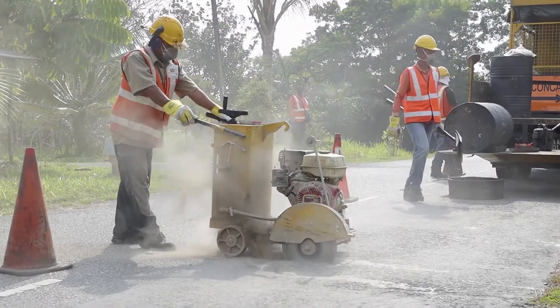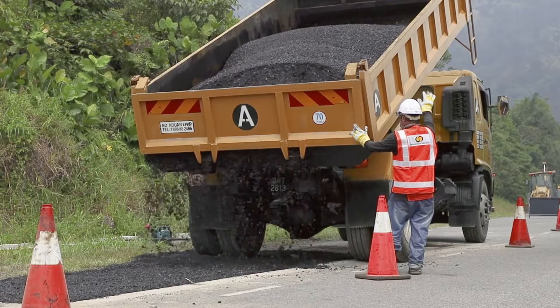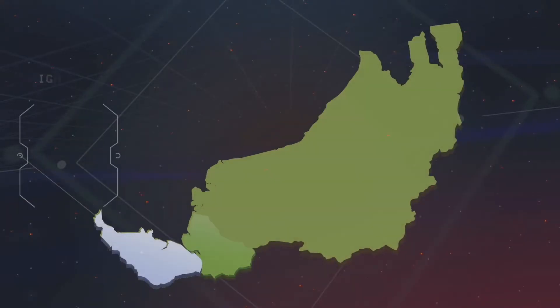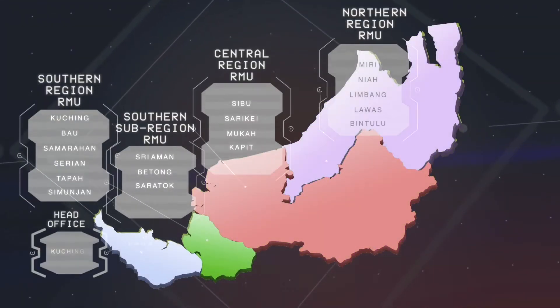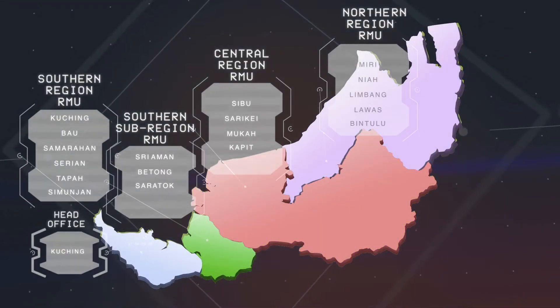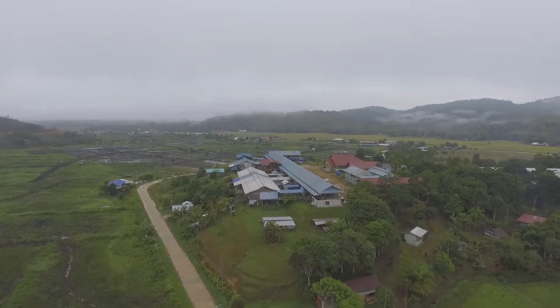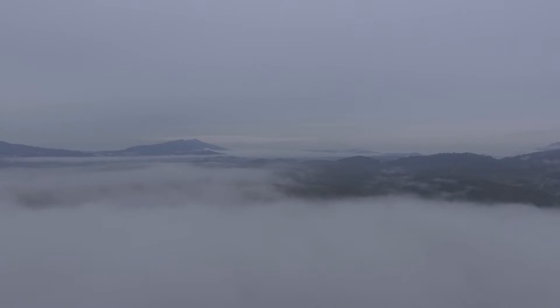CMS Roads implemented a comprehensive quality assurance system with material tests executed within 18 road maintenance units and four regional offices spanning across the southwestern tip to the northeastern part of Sarawak, including Barrio, which is 3,280 feet above sea level.